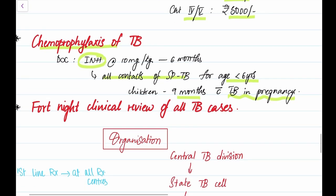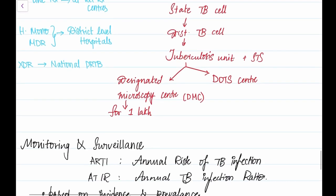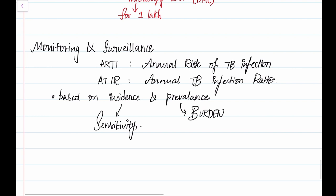The next strategy is fortnight clinical review of all TB cases, ending the program with monitoring and surveillance. For every program, monitoring and surveillance is a must, the last step to see how successful the program is and if it's able to achieve its targets following its strategies. Monitoring and surveillance is based on annual risk of TB infection and annual TB infection ratio, ARTI and ATIR. It's based on incidence and prevalence. Incidence gives us the sensitivity of how well the treatment is working, and prevalence gives us the burden.